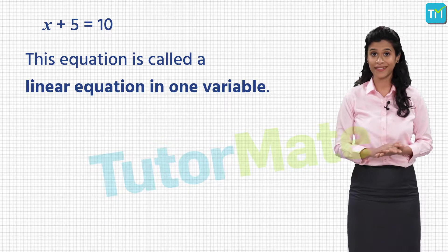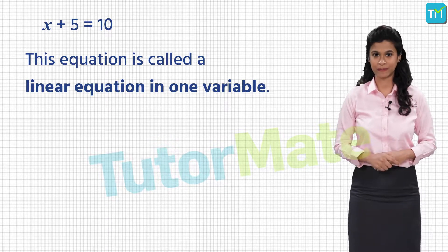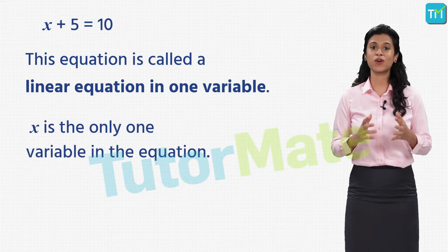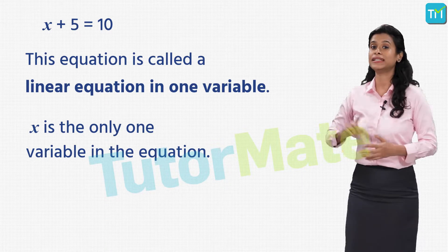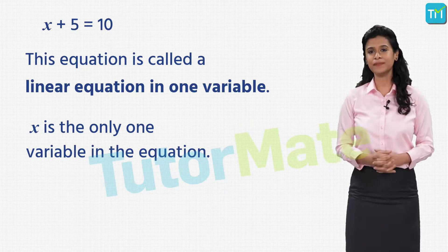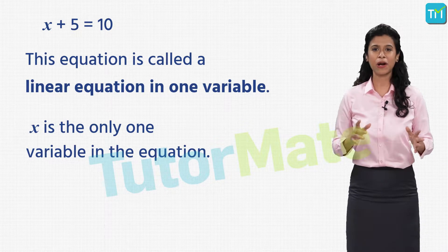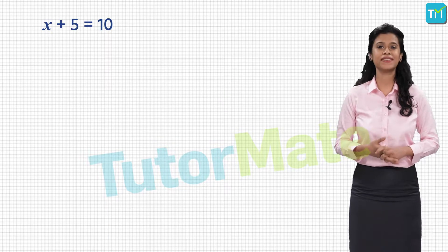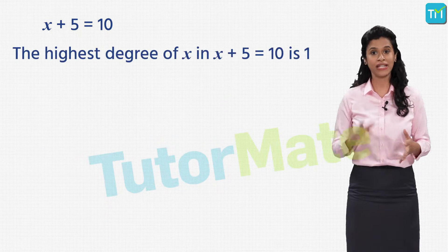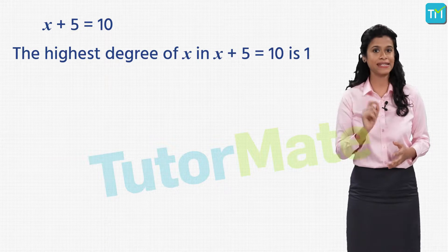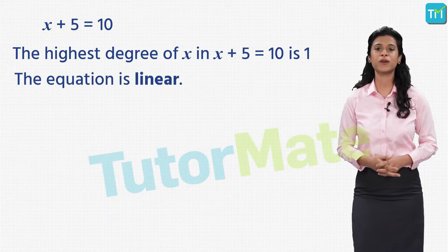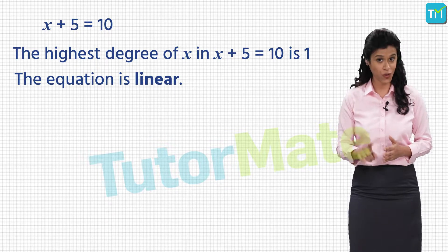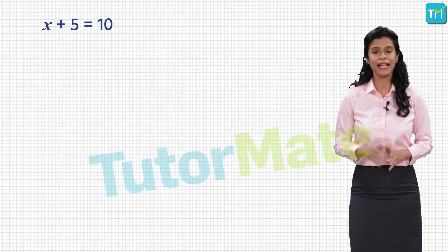This equation, X plus five is equal to ten, is called a linear equation in one variable. Why one? Because it contains only one variable, that is X. But why is it linear? Do you remember studying about a term called degree in polynomials? The highest degree of this equation is one, which makes it linear. So the type of equations where the maximum degree of all the variables is one are called linear equations.